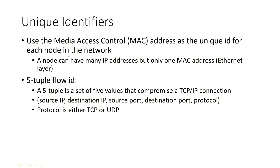For unique identifiers, use the MAC address as the unique ID for each node in the network. A node can have many IP addresses but only one MAC address, so that's your unique ID for node objects. Also use a five-tuple flow ID as a unique ID for a TCP/IP connection — a tuple of five values: source IP, destination IP, source port, destination port, and the transport layer protocol, which is either TCP or UDP.